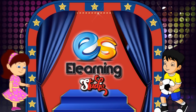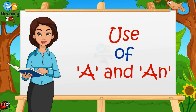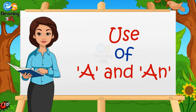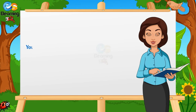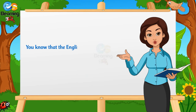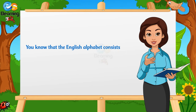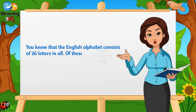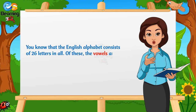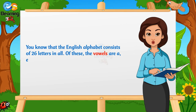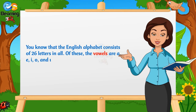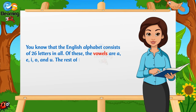E-Learning Studio: Use of A and AN. You know that the English alphabet consists of 26 letters in all. Of these, the vowels are A, E, I, O, and U. The rest of them are known as consonants.